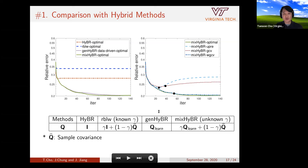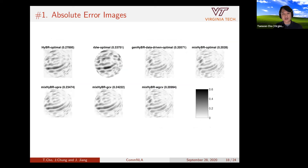With lambda and gamma chosen automatically by WGCV or UPRE, you can see that using a learned covariance matrix is much better than using just identity or a shrinkage method. The optimal case is not achievable in practice, so we tested our method using the L-curve, GCV, and weighted GCV to choose gamma and lambda. They stop early and achieve lower error than the identity or shrinkage cases. Looking at the absolute error images for the true data, larger errors appear as dark areas, but for the optimal, learned, generalized hybrid data-driven, and mixed hybrid cases we get a much lighter error map.